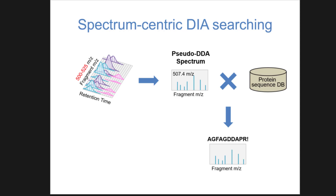Another way to think about this — and this is really the only way we've come as a field to think about DIA data from the standpoint of a spectrum-centric search — you would take this fragment space data where you have fragments associated with each other in retention time but not in mass, and then generate from that what are effectively pseudospectra with a precursor mass that look like a DDA spectrum, because you know that the precursor and fragment ions co-elute with each other. Then treat that as if it were a normal spectrum in a DDA search pipeline using Sequest or Mascot.